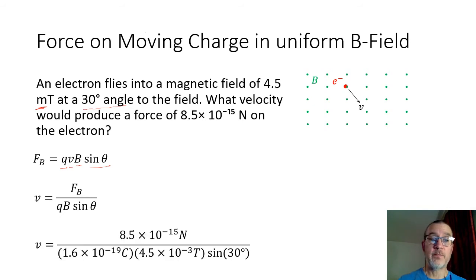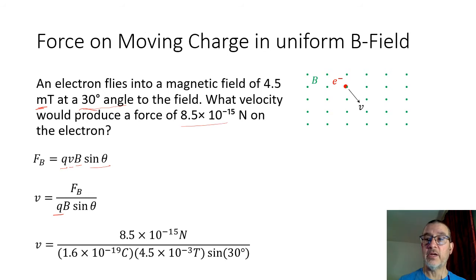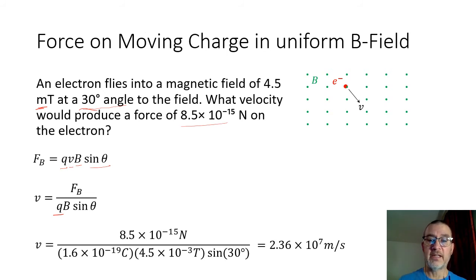Now we can substitute values. The force is 8.5 × 10⁻¹⁵ newtons. The charge is the charge on an electron, the magnitude of which is 1.6 × 10⁻¹⁹ coulombs. The magnetic field strength was given as 4.5 mT, so 4.5 × 10⁻³ Tesla. And sine theta — theta is given as 30 degrees, so we have sine 30°. That gives a value of 2.36 × 10⁷ meters per second. That is the velocity the electron is traveling.